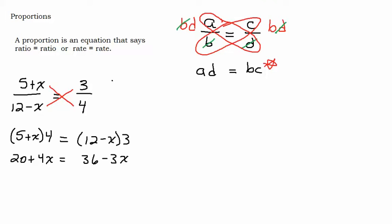Now I need to get my x's on the same side. So you could either add 3x or you could minus this 4x. But I'm going to add 3x because that keeps my x term positive. So I get 20 plus 7x equals 36. This is going to come out fraction-y too. So I'm going to subtract 20 from both sides. And write my answer over here.